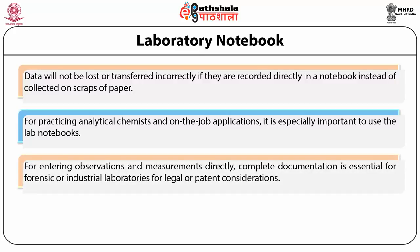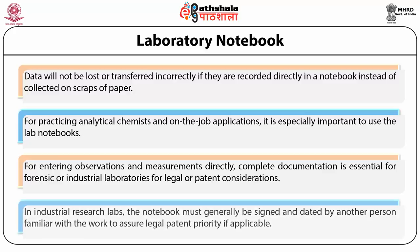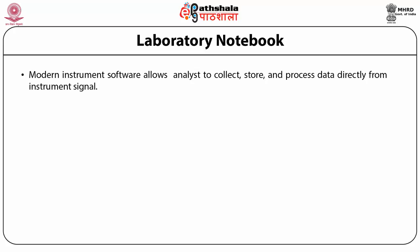Data will not be lost or transferred incorrectly if recorded directly in a notebook instead of on scraps of paper. For practicing analytical chemists, it is especially important to use the lab notebook for entering observations and measurements directly. Complete documentation is essential for forensic or industrial laboratories for legal or patent considerations. In industrial research labs, the notebook must generally be signed and dated by another person familiar with the work to assure legal patent priority. Modern instrument software allows analysts to collect, store, and process data directly from the instrument signal based on appropriate calibration, and it is important that software and calibration can be validated as part of good laboratory practice.